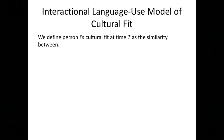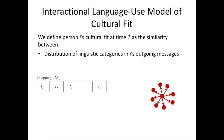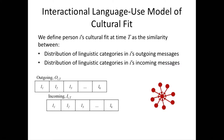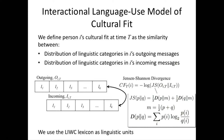We developed something known as the Interactional Language Use Model of cultural fit, also with colleagues — Chris Potts at the linguistics department here at Stanford. The idea is as follows: we define individual i's cultural fit at time t — where time t is measured in months — as the similarity between two distributions: the distribution of linguistic categories in i's outgoing and incoming messages. Basically the level of congruence in the language that i uses communicating with others and that others use communicating with i. We use the Jensen-Shannon divergence — I put this formula only to assert my mathematical authority — which is a common way of measuring congruence between distributions.